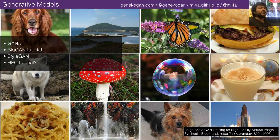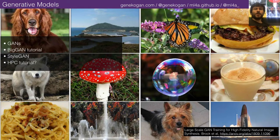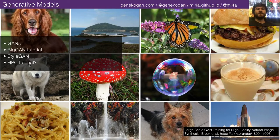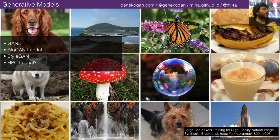We introduced PCA the week before, and then last week we finally introduced GANs and what they are. Today we'll do a tutorial on BigGANs, which is the easiest way for us to start playing with them and seeing some of their properties. We'll also try to show you some extra tools useful for working with datasets — how to scrape images from the internet and how to prepare datasets in the right dimensions.